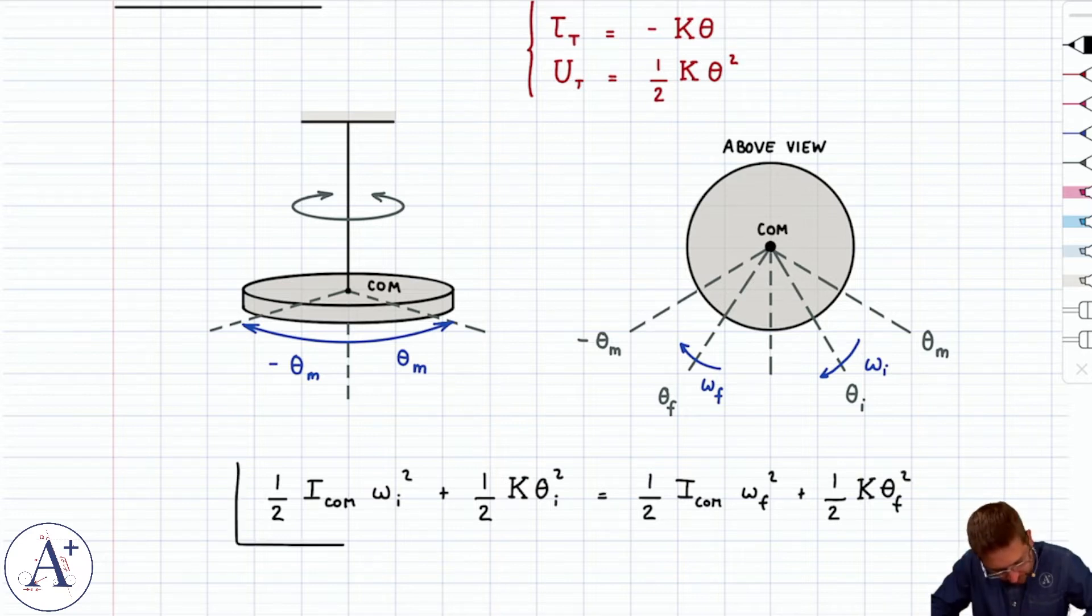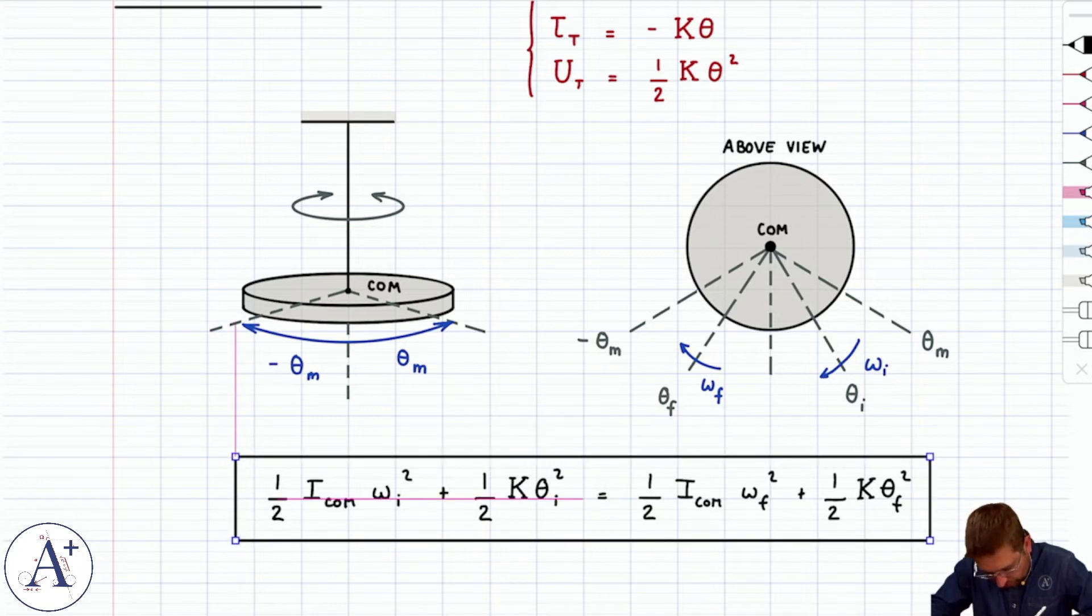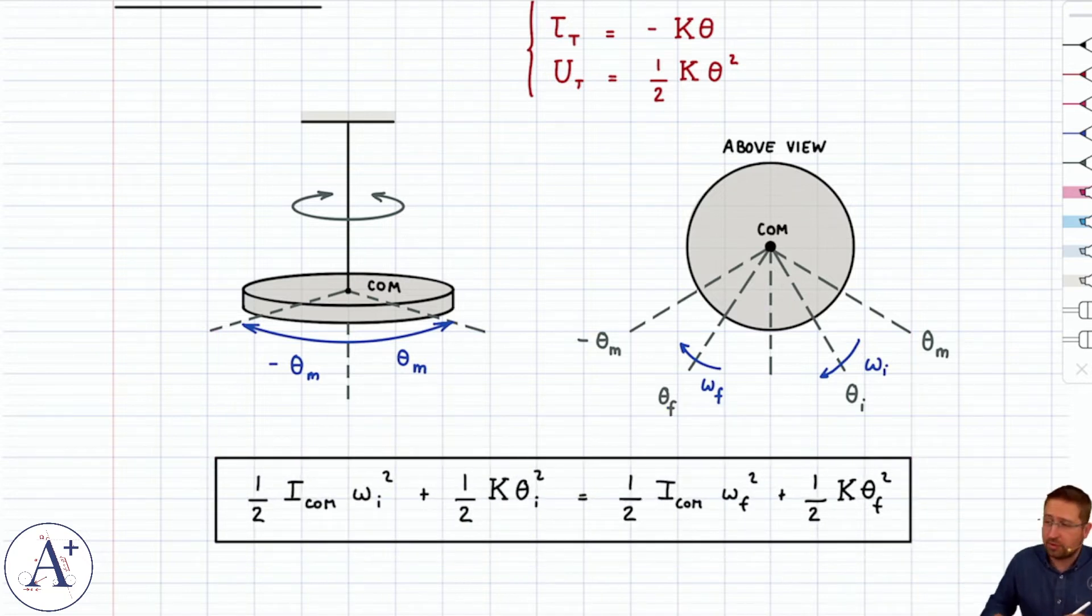The moment of inertia I center of mass will depend on what type of object you've used to create your torsional pendulum. Pretty often it's a disk, but it doesn't have to be, so we'll just call it I center of mass.